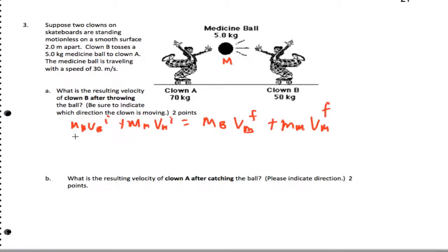Everything starts off at rest to begin with. So I'm going to have 50 starting at 0 meters per second and 5 kilograms starting at 0 meters per second. And then what ends up happening is that clown B acquires its final speed that we're going to find in a second. And the medicine ball ends up going to the left at 30 meters per second, so I'm going to make that negative. What this then means is that the final speed of clown B ends up being positive 3 meters per second.